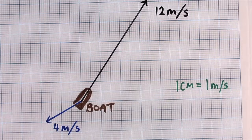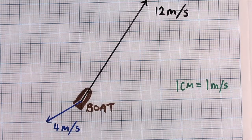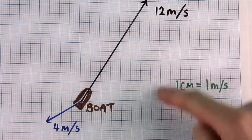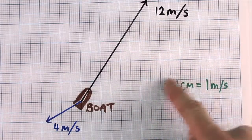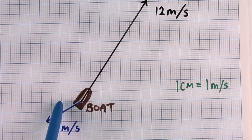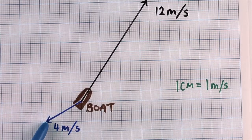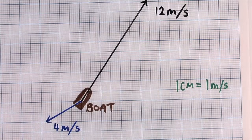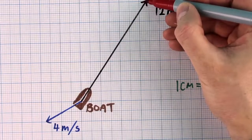To work out the resultant, or net velocity, we'll use the tip-to-tail addition of vectors. Because it's on graph paper this time, that makes it slightly easier, because we can use the grid lines to help us. We can see the 4 meter per second vector travels 3 and a half boxes to the left, and 2 boxes downward. So we can just use that as a rough guide to redraw this vector at the tip of the other vector.